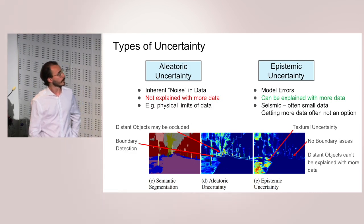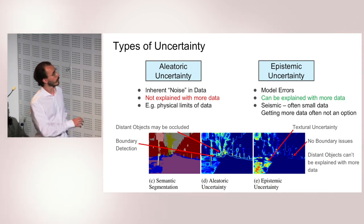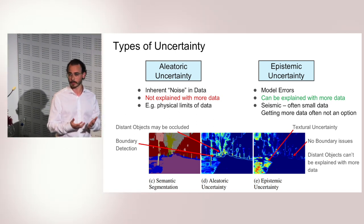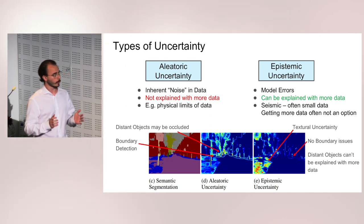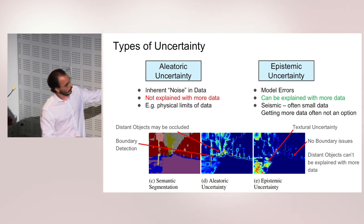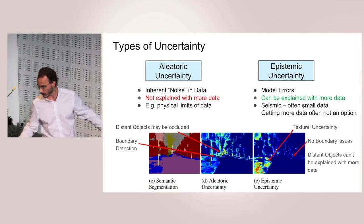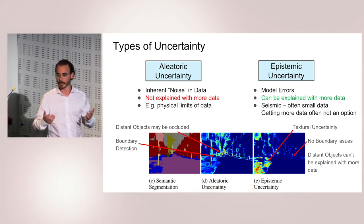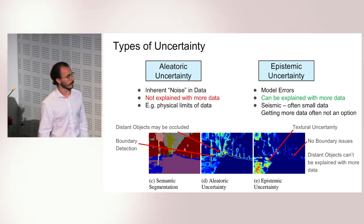In general, what types of uncertainty can we distinguish? Not only in seismic data, but this could be a general computer vision or data analysis task. There are two different categories. One is so-called aleatoric uncertainty, which is just inherent noise in the data. Because things happen based on random processes, you get fluctuations that you simply cannot explain away with more data. An example of this is shown here on the bottom, where you have a semantic segmentation of a street scene. The objects that are very far in the background are occluded, and even if you got more images like this, you would never be able to tell what is actually present in that far distant background.